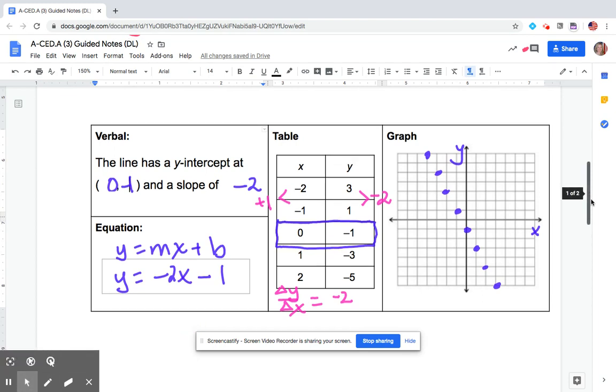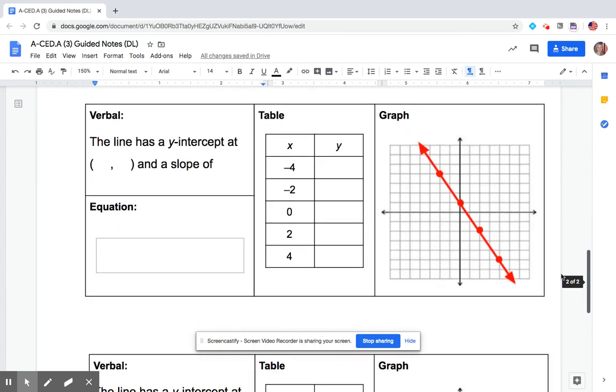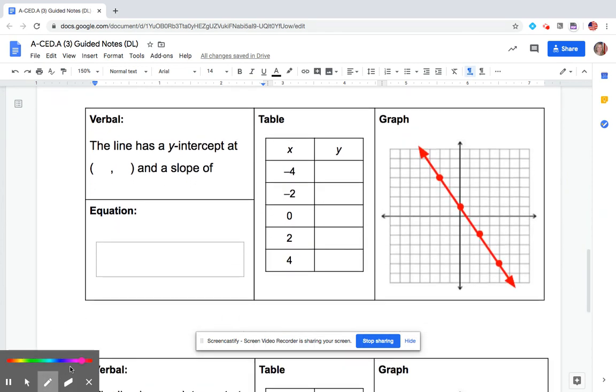Let's look at another representation. Okay, in this case they've given us the graph, we have to figure everything else out. So let's do that. Let's take the graph - again I love to start with my y-intercept. Looks like it's 0 comma 1, and so I can fill that right here.